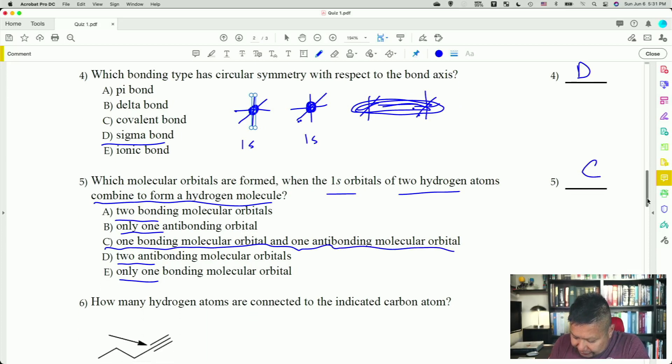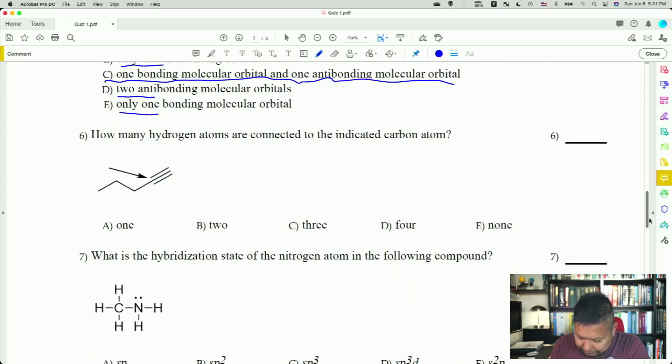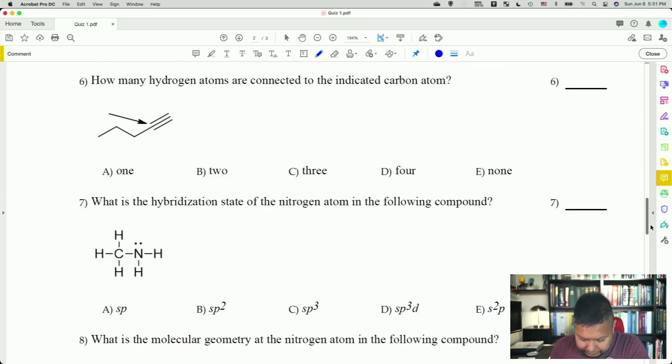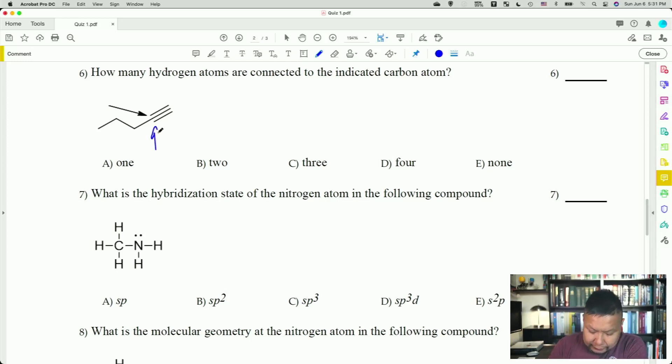Let's move on to number six. How many hydrogen atoms are connected to the indicated carbon atom right there? Well, that's pretty simple. We've got a triple bonded carbon right there, and it's connected to another carbon. That's already four bonds. Carbon can only have four bonds. Don't be like that one guy that thought it had six or twelve bonds. So obviously there are no hydrogens on that one. The answer there is E.